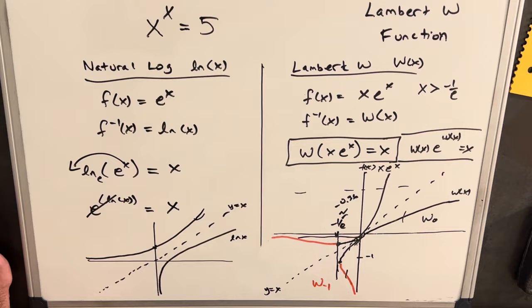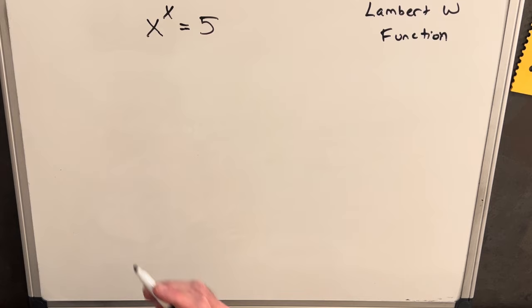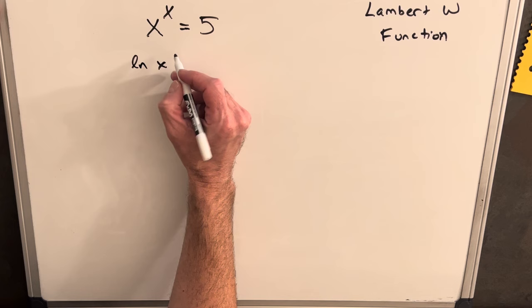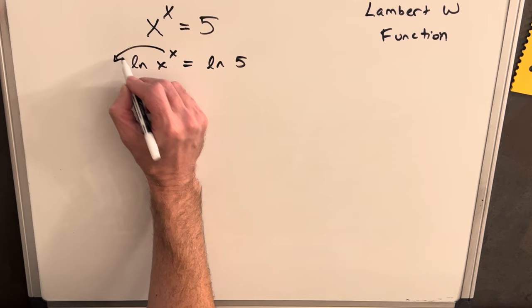So now let's actually look at this problem, x to the x equals 5. And we'll do this, we'll try to do the same thing we did before and we'll take ln on both sides. So we'll have ln of x to the x equals ln of 5. And we'll bring our x to the front. So we already did this.